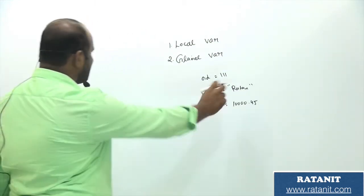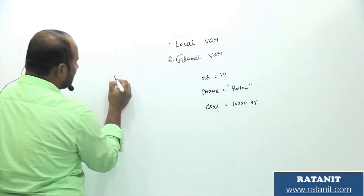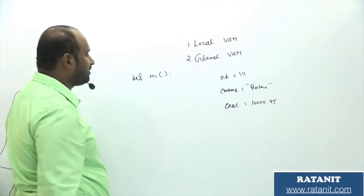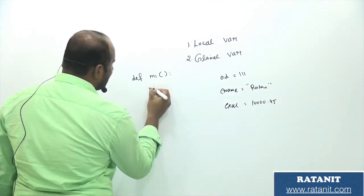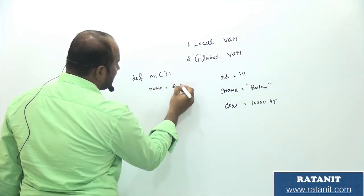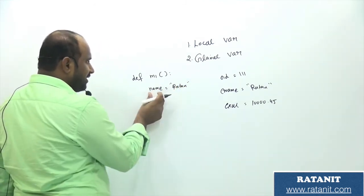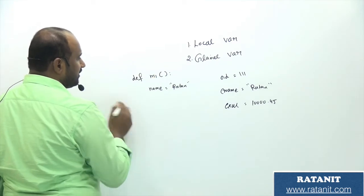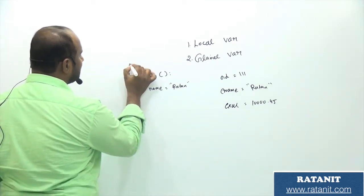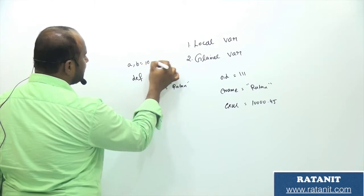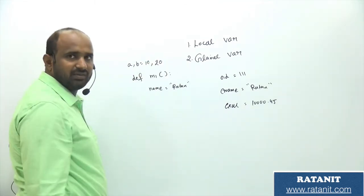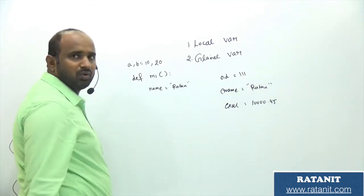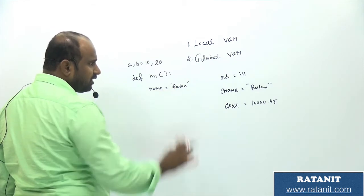Let me declare local variables. How to declare the function? By using the def keyword. So, def M1 — function name is M1 — colon. Here I am declaring name equal to 'Rathan' within double quotes. The name variable is declared inside the function, so this is called a local variable. Outside of the function, I am declaring A, B = 10, 20. So A is 10 and B is 20. These variables are called global variables.